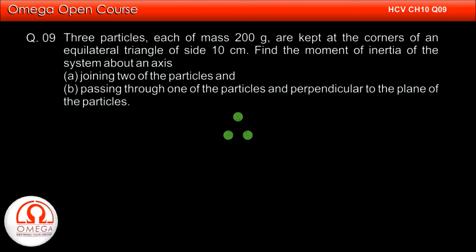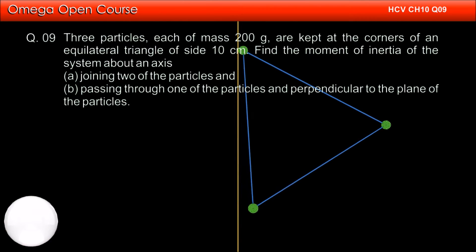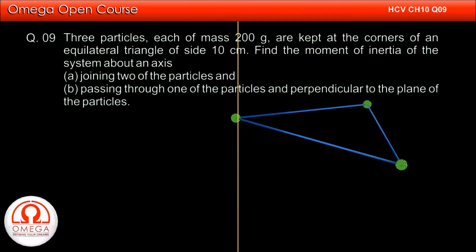Three particles, each of mass 200 grams, are kept at the corners of an equilateral triangle of side 10 cm. Find the moment of inertia of the system about an axis (a) joining two of the particles and (b) passing through one of the particles and perpendicular to the plane of the particles.